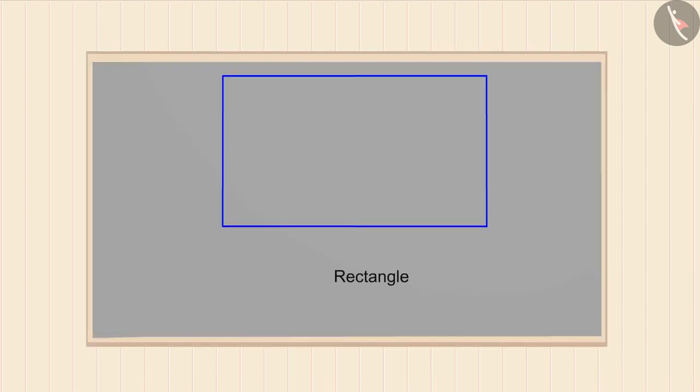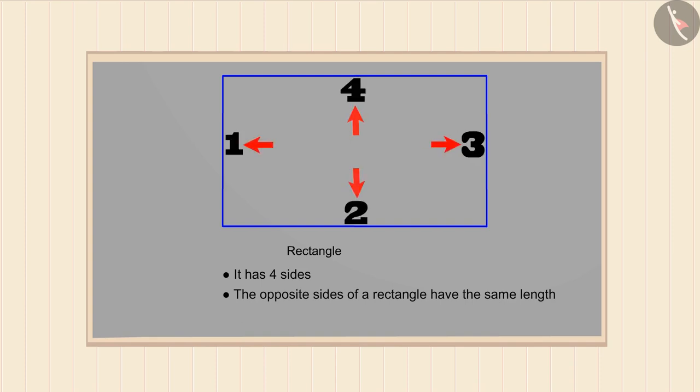So this is a rectangle. A rectangle is a shape which has four sides and the length of its opposite sides are the same.